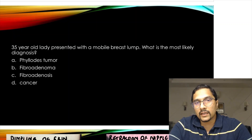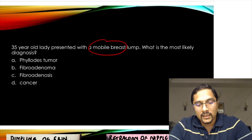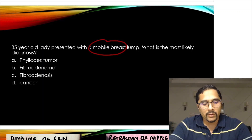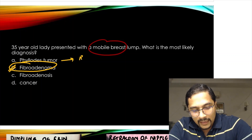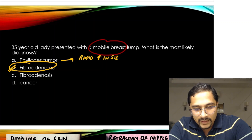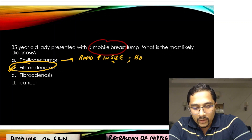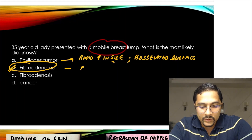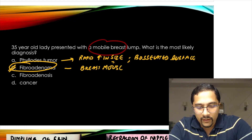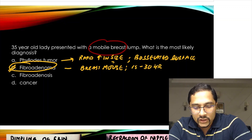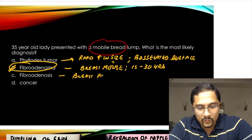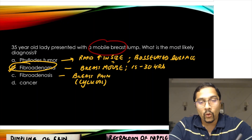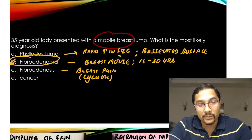A 35-year-old lady with a mobile lump in the breast — a 'breast mouse' — is a typical description of fibroadenoma. Phyllodes tumor presents with rapid progressive increase in size and a bosselated surface. Fibroadenoma is known as a breast mouse and the typical age group is 15 to 30 years. Fibroadenosis presents with cyclical breast pain — worse before periods, settling as periods start.